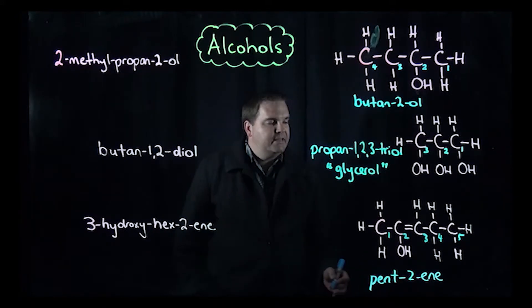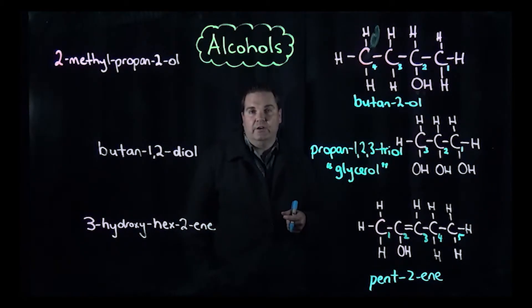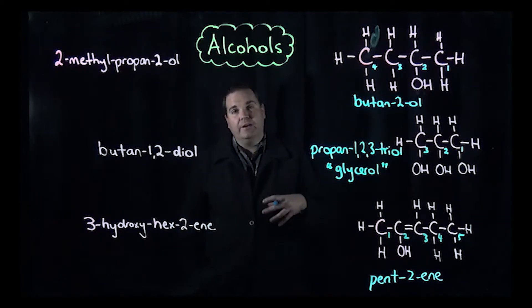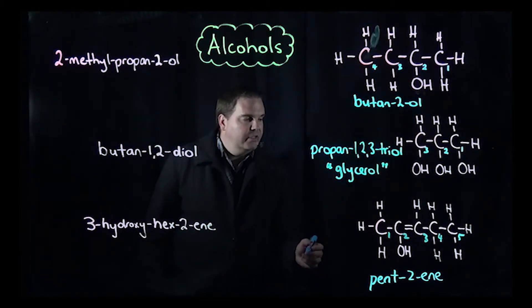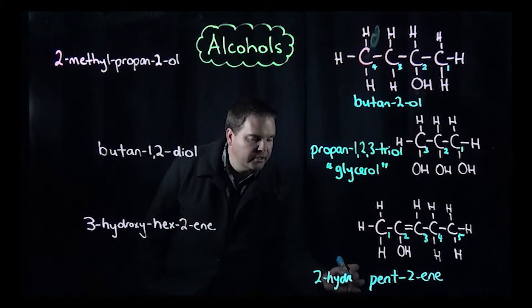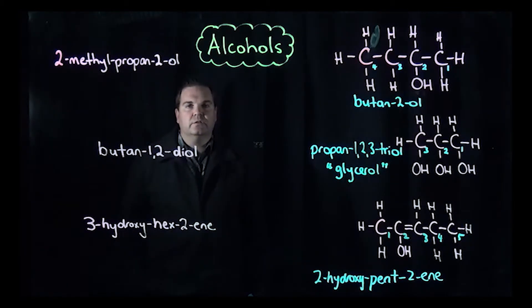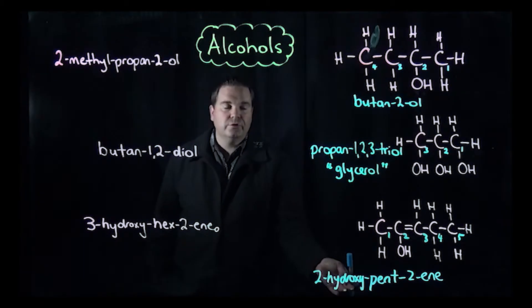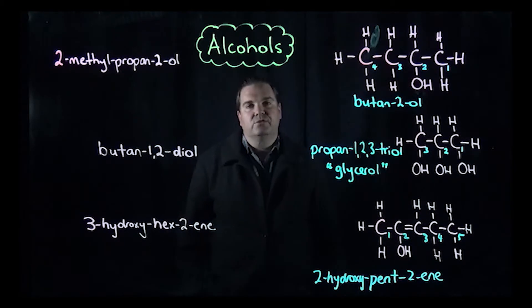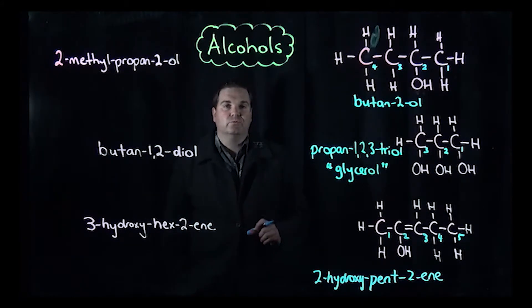We've got an alcohol group on the second carbon, but we can't do OL on the end anymore, so we put that side chain at the front like we would in a normal organic molecule. It's 2-hydroxy, as the OH group is also called the hydroxyl group. So it's 2-hydroxy pent-2-ene. This tells us on the second carbon we've got an OH group and a double bond. That's how you name an organic molecule if the alcohol group isn't the only functional group.